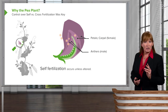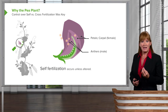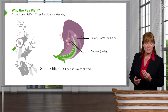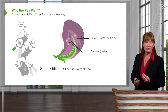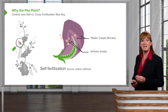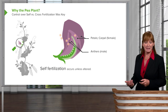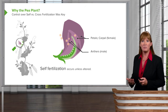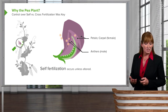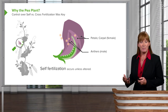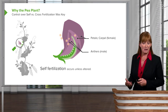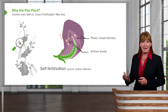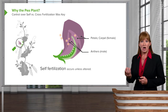Let's take a look to start with at the pea plant and how self-fertilization might happen versus cross-fertilization. First of all, it's key to understand that the pea plant has both male and female components in its flower. So it has anthers, which contain pollen and are male, as well as carpels, which contain the female ovule.